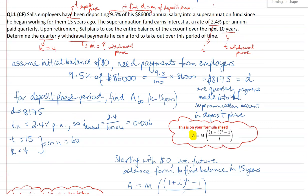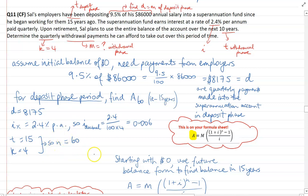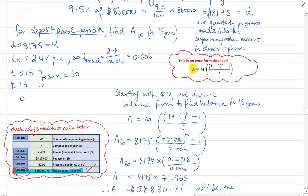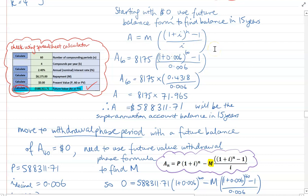This is a deposit phase investment scenario moving into a withdrawal phase. The 9.5% of the $86,000 annual salary means regular quarterly deposits of $8,175. For the deposit phase: 15 years of quarterly deposits means N equals 60 compounding periods, deposits M are $8,175. We use the future value form of the annuities formula — starting with zero balance. Plugging all values in carefully, you should end up with a balance after 15 years of $588,311.71.